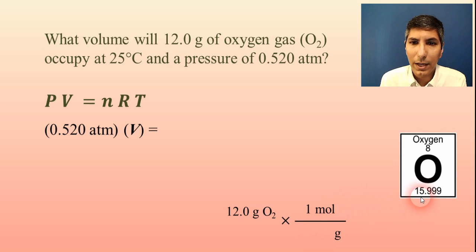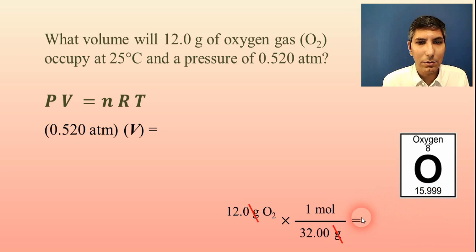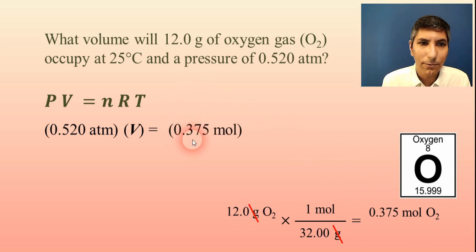Well, we can look at the periodic table, and it's O2, so we have to times this value by two. It's about 32.00 grams in a mole. So when we cancel grams and divide, we find that we have 0.375 moles of oxygen. That's the number that gets plugged in here for N.